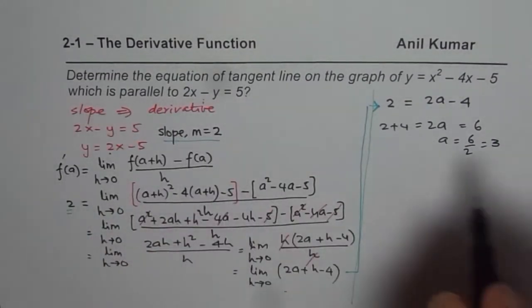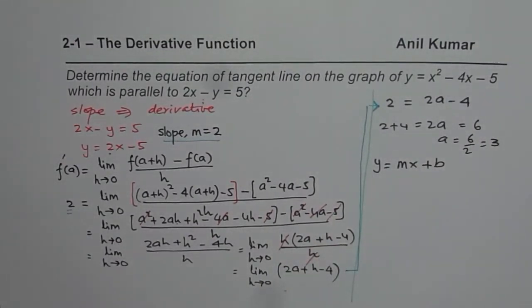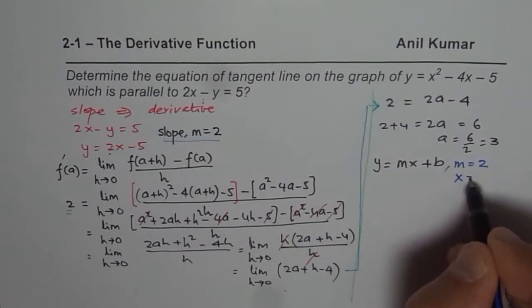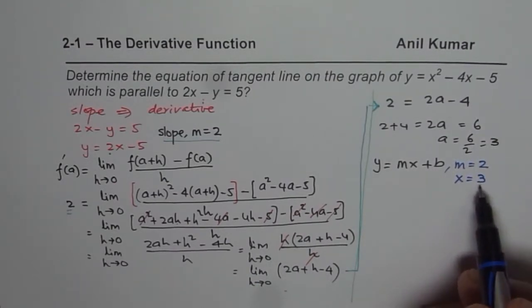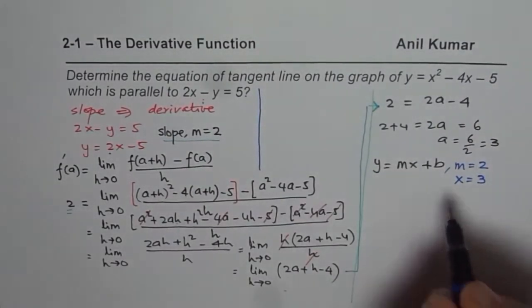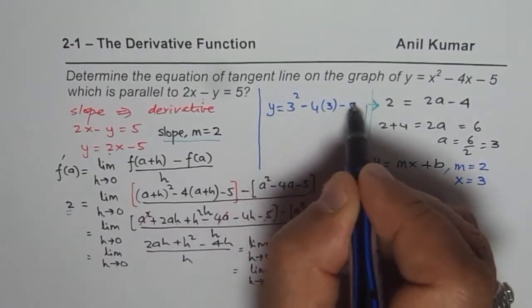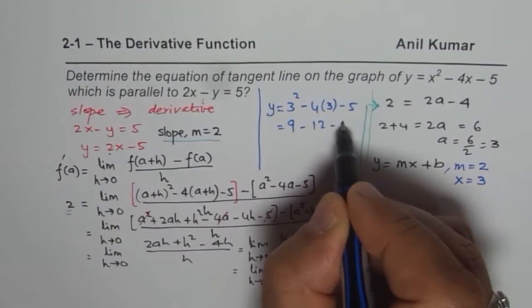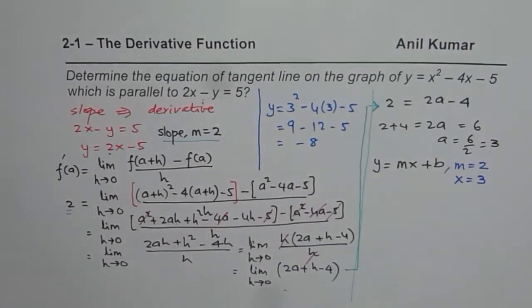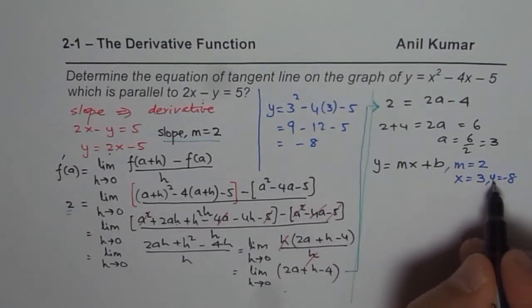Now it says determine the equation. So equation means let it be y = mx + b. And here, what do we know? Slope m = 2 and the value of x is 3. Now when x is 3, what is y? We should find that also. So y will be equal to 3² - 4(3) - 5. That is 9 - 12 - 5, and that will give me -3 and -5 is -8. So x is 3 and y is -8. I will substitute these values.